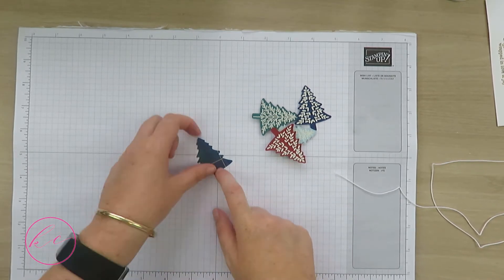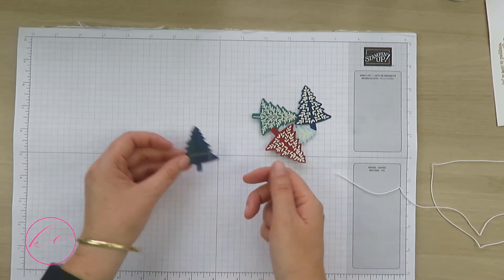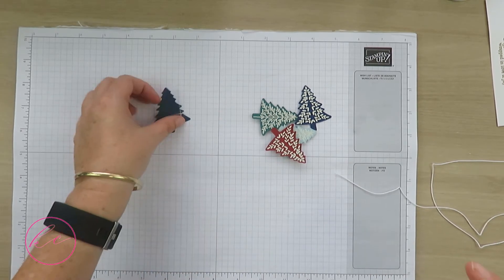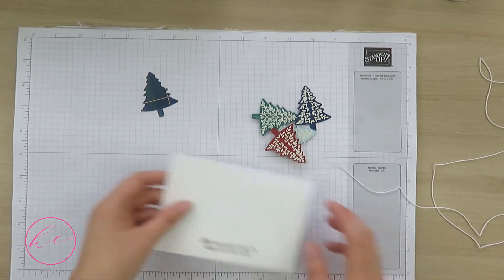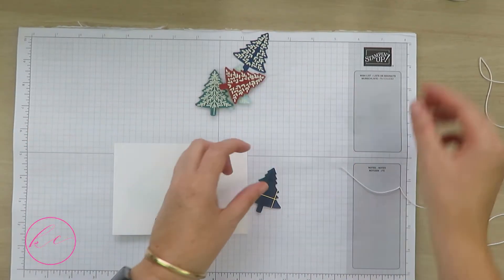I've also punched out a tree from our Perfectly Plaid Designer Series Paper that coordinates with this stamp set. I've got it in this color here. Now it's time to assemble our card, but before we do that